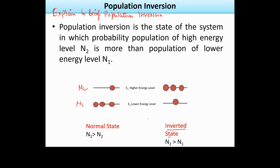In the inverted state, we go from the lower energy state to an unstable state. Stability is not maintained when we are in this state, so this is a non-equilibrium state. It exists only for a short time, and it is obtained by a technique called pumping. Through the pumping technique, the population inversion or inverted state is achieved.